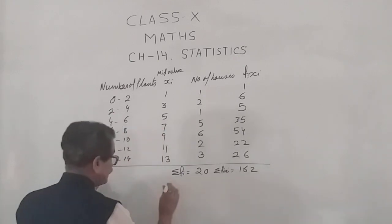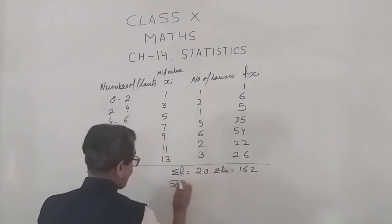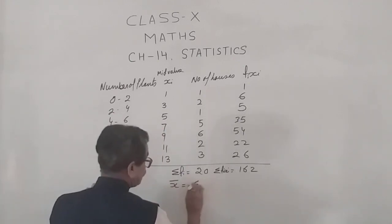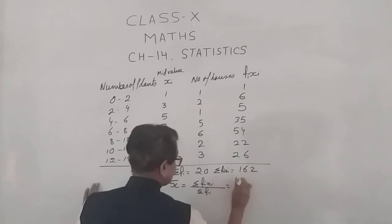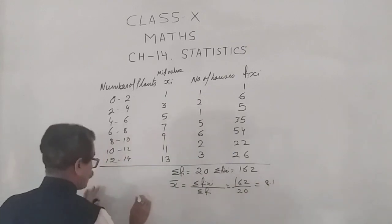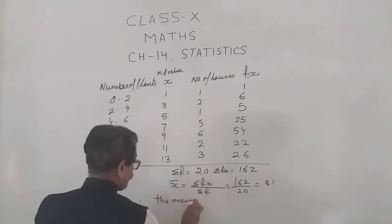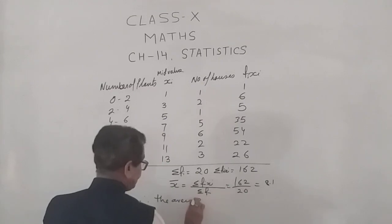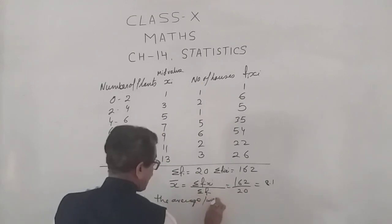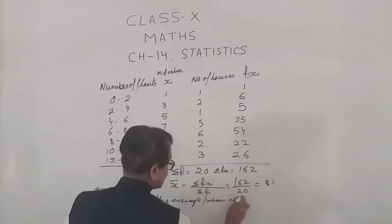The mean is x̄, that is sigma fi xi upon sigma fi, which is 162 upon 20, which is 8.1. Therefore, the average or mean number of plants is 8.1.